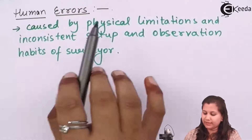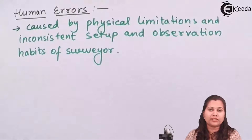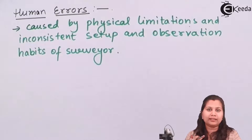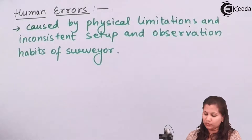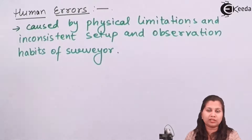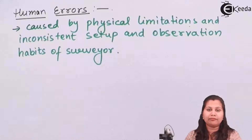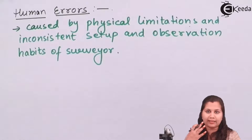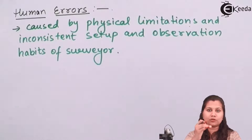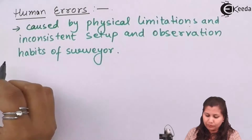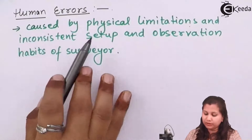The causes of human errors include the physical limitations of the observer — for example, if the observer has been working for a long period and is tired. Errors also occur due to inconsistent setup, such as wrongly connecting the instrument. Additionally, observation habits matter: when taking readings through a glass, the observer's eye level and the instrument should be at the same level to get correct readings.